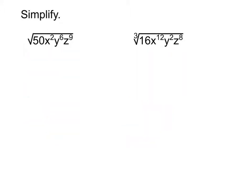Working through these next two problems, there are some added complexities we didn't have to deal with before. The very first thing in this one is dealing with the square root of 50. That's not a nice whole number, so we need to find the biggest perfect square that goes into it and break it into two pieces. The biggest perfect square that goes into 50 is 25, because 25 goes in twice. So the square root of 50 becomes root 25 times root 2.